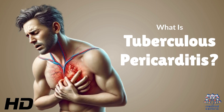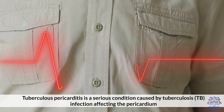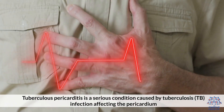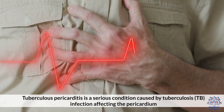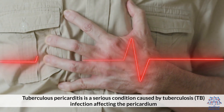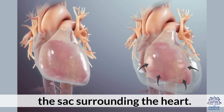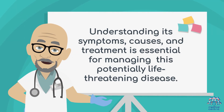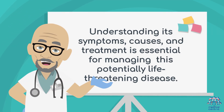Today's medical-centric topic is: What is Tuberculosis Pericarditis? Tuberculosis pericarditis is a serious condition caused by tuberculosis (TB) infection affecting the pericardium, the sac surrounding the heart. Understanding its symptoms, causes, and treatment is essential for managing this potentially life-threatening disease.